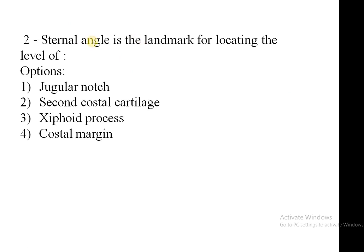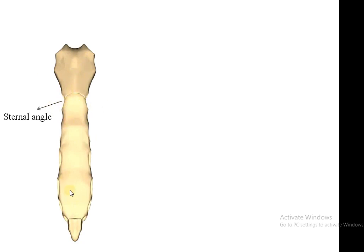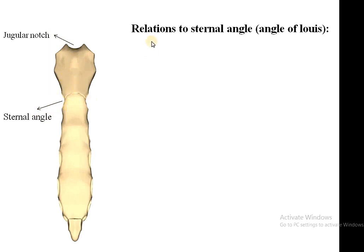Question two is about the sternal angle. The sternal angle is a landmark for locating structures. The options were: jugular notch, second intercostal cartilage, xiphoid process, and costal margins. The sternum has the manubrium sterni at the top and the xiphoid process at the bottom. The sternal angle is where the manubrium joins the body of the sternum. The jugular notch is at the upper part of the manubrium and is not related to the sternal angle.